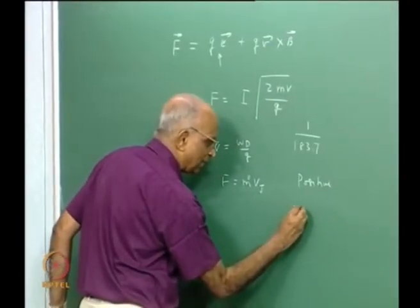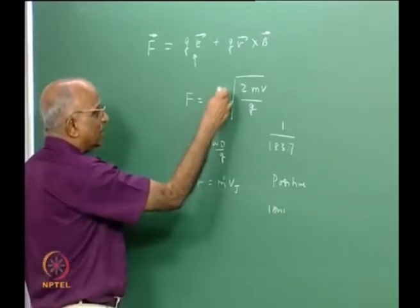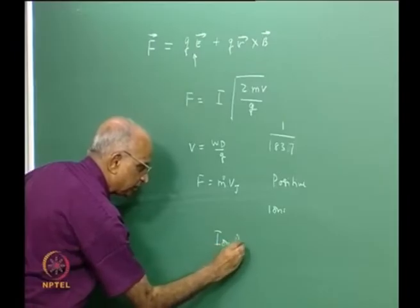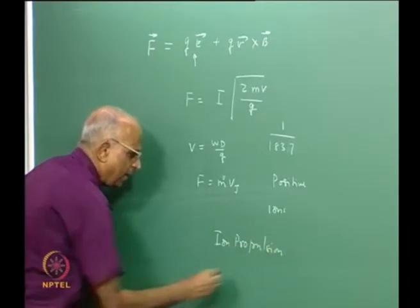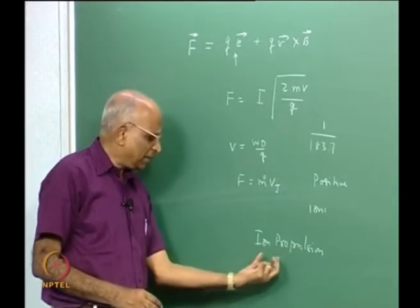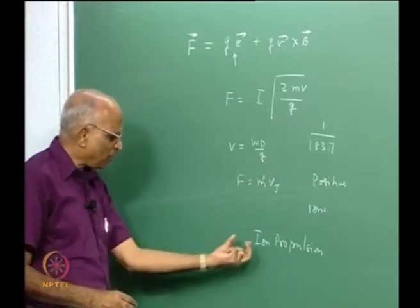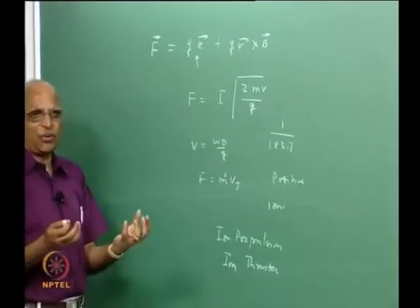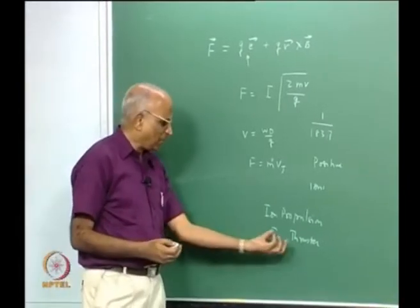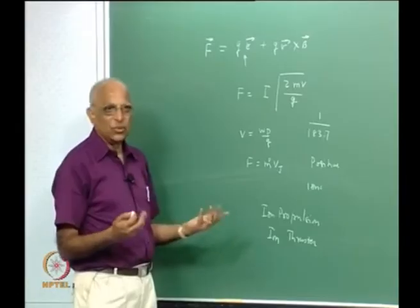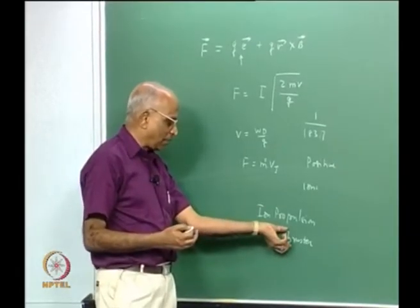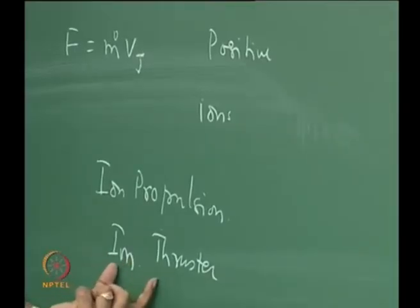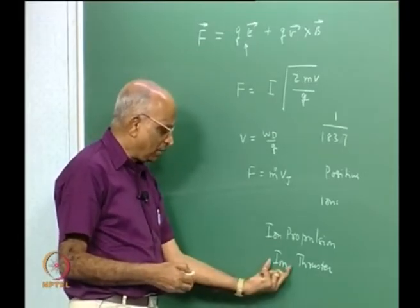Therefore these positive charges are what are called ions. Such a mechanism using the electrostatic — namely an electrical field — for generating a force is known as ion propulsion. We call it an ion rocket, but the forces generated are so small that instead of calling it an ion rocket, we call it an ion thruster. When we talk of low thrust rockets, we call it a thruster instead of a rocket. Generally, the low value of thrust a rocket produces is known as a thruster, and all electrical rockets like electrostatic rockets generate low thrust.